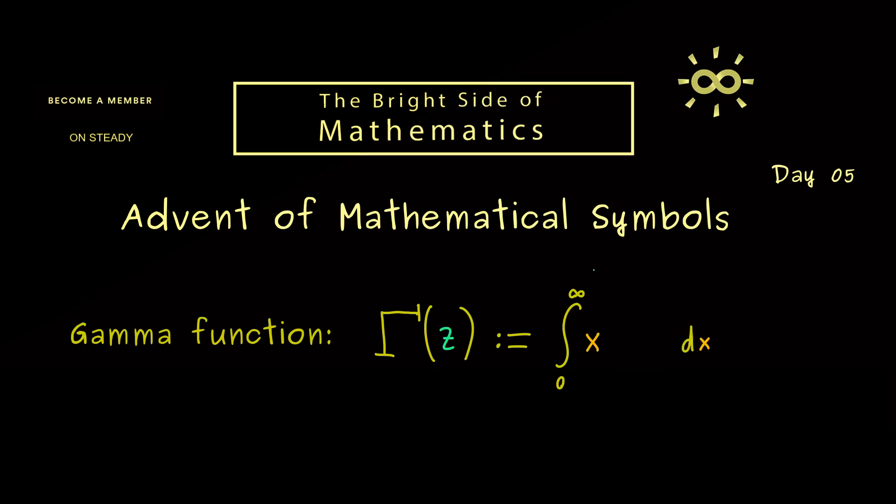The number z from the left-hand side appears in the exponent of x. It's x to the power z minus 1, multiplied with e to the power minus x.